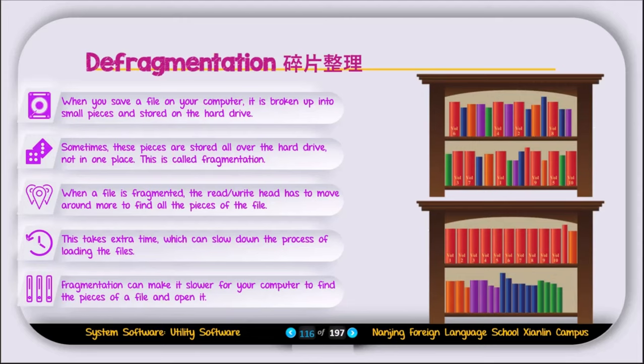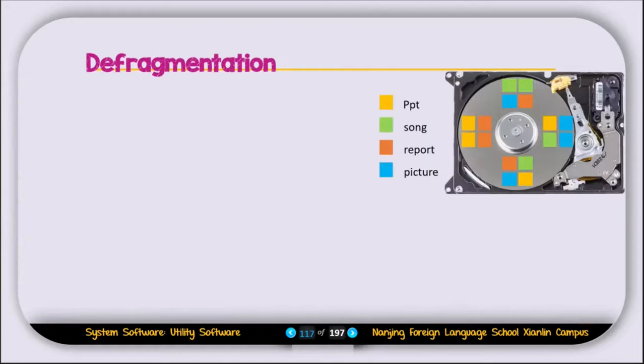Here you can see one example. We have two bookshelves. On the first bookshelf, the books are stored in random order, so if I ask you to find a book, you need some time. But on the second shelf, books are stored in order, so it's easier to find a book. Similarly, if data is stored on the hard disk in a random order, the read-write head needs to find that data and it takes time. Now let's discuss what the defragmentation utility is.